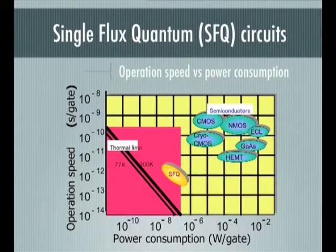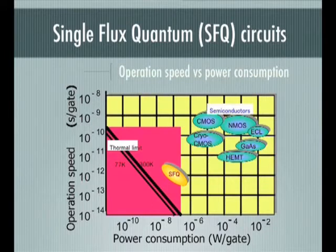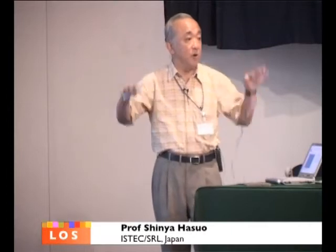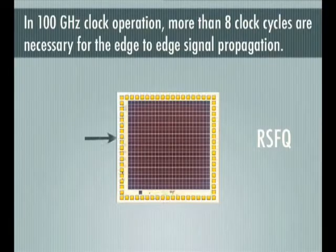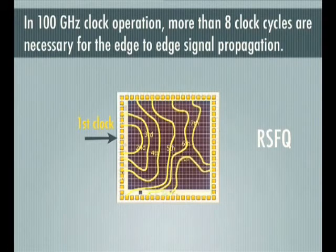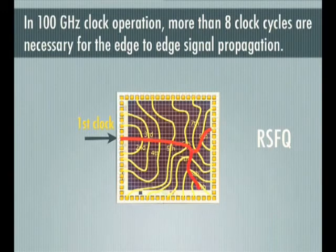SFQ LSI can be operated with a clock frequency of a few tens of gigahertz as a global clock, making SFQ LSI about 100 times faster than conventional LSI. Semiconductor devices operate on the same clock frequency across the whole chain. But in the case of SFQ circuits, several clock cycles are necessary for edge-to-edge propagation — this is completely different from semiconductor devices. This illustration is very simplified; actually many signals run in the circuit, making it much more complicated.